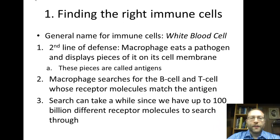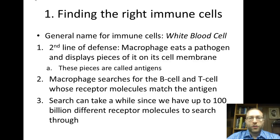Step one is to find the right immune cell. At this point, the second line of defense is active throughout, but it's usually being overwhelmed by the pathogen. The macrophages and dendritic cells are eating the pathogen, and they display pieces of the pathogen they've eaten on the cell membrane. The pathogen is dead and taken apart; these pieces are called antigens. The macrophage then searches for the B and T cells, looking for the specific ones that match the antigen.